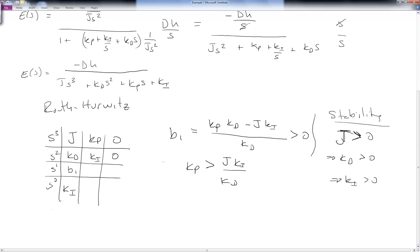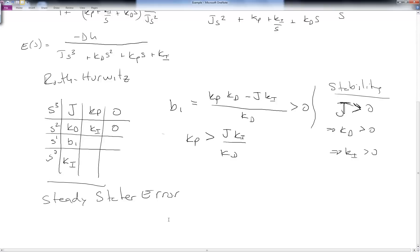Stability is great, but now let's see what about the steady state error. What happens? Well, we can go ahead and calculate the steady state error as we've done before by taking the limit. So we take the limit of s times minus dh over j s cubed plus kd s squared plus kp s plus ki. And we go ahead and take this as s goes to zero.